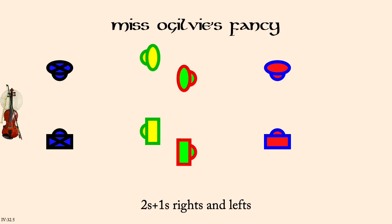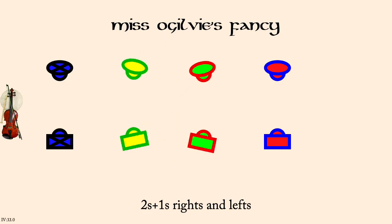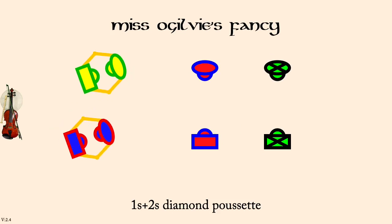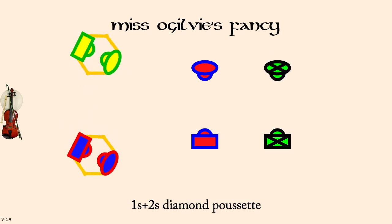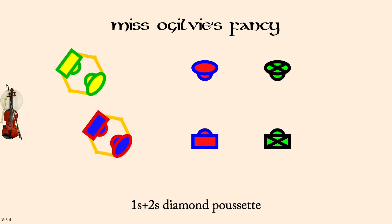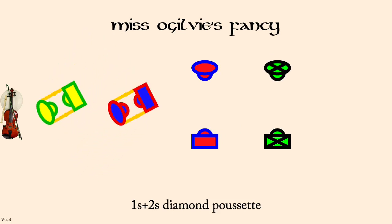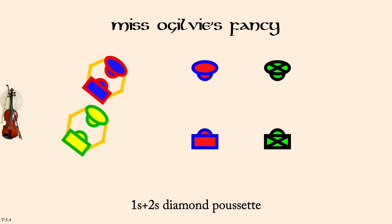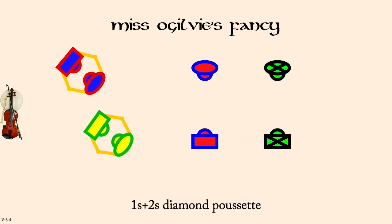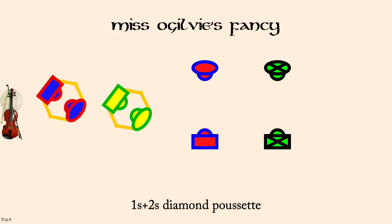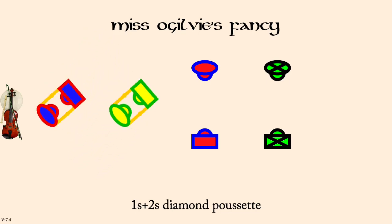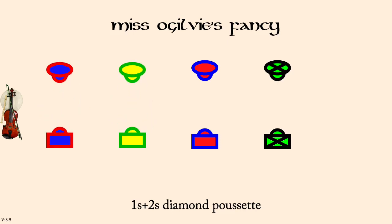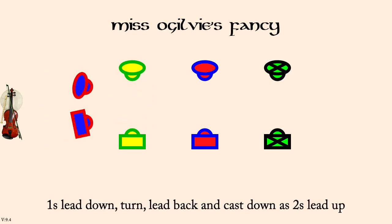Ones and twos, Diamond Pousset. Ones and twos, Diamond Pousset. Turn, lead back, and cast down as twos lead up.